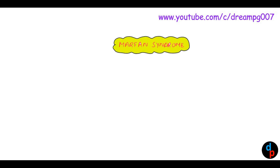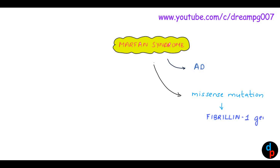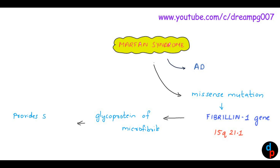Marfan Syndrome is an autosomal dominant disorder. The genetics behind Marfan Syndrome is a missense mutation happening in the fibrillin-1 gene, which is located in the long arm of the 15th chromosome. This fibrillin-1 gene codes for a protein called fibrillin, which is the glycoprotein of microfibrils. This protein provides scaffolding for elastin deposition.